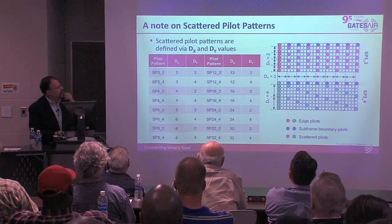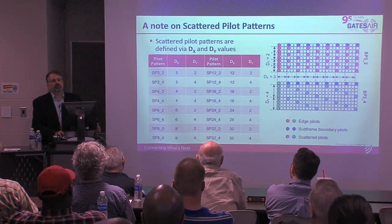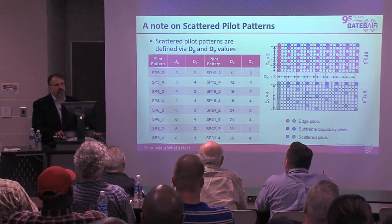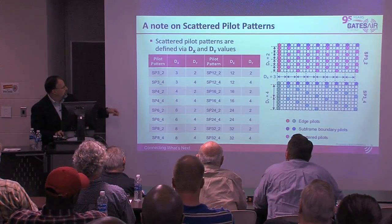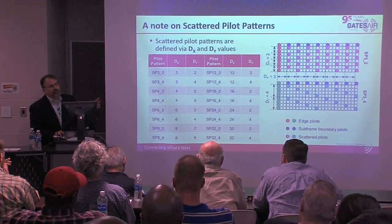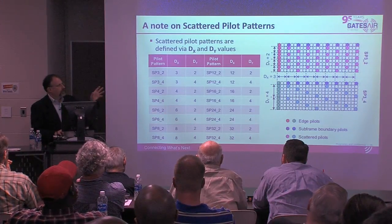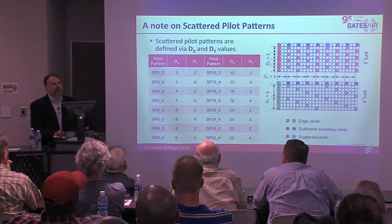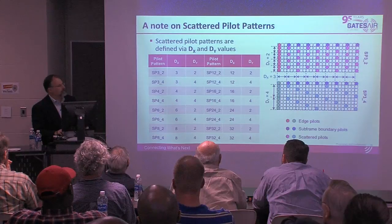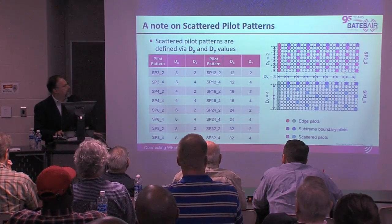The scattered pilot pattern is referred to in terms of DX and DY values — for example, pilot pattern 6-2 or 12-1, referring to the distance in the time axis (X) and frequency axis (Y). Available patterns include 3-2, 3-4, 6-2, 8-4 and others. By selecting the pilot pattern choices, you can decide whether to have more pilots in the frequency domain or the time domain.